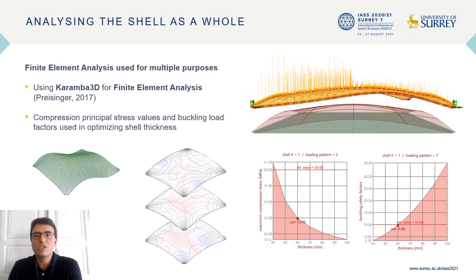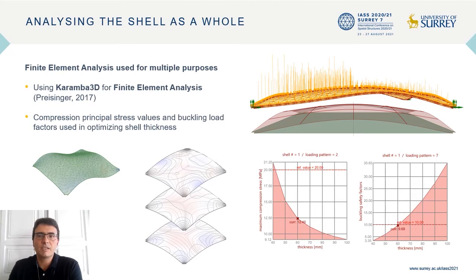We then determine the shell's thickness, which should be minimized to reduce the amount of concrete, while keeping critical parameters such as compression stresses and buckling load vectors within acceptable ranges. To determine an optimized value for shell thickness, a preliminary finite element analysis is performed on a form-found shell using the Grasshopper plugin Karamba. Note that throughout the design workflow, analysis tasks are performed using Karamba rather than Kiwi, since Karamba provides a wider range of results.